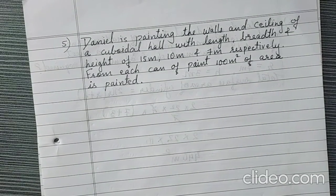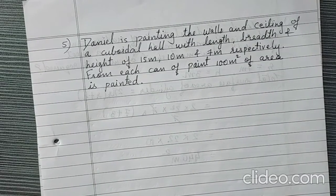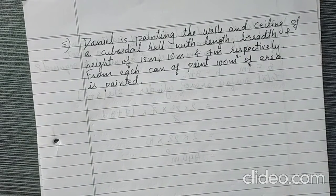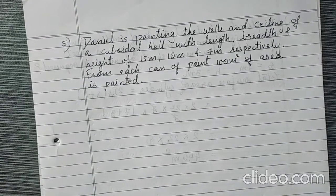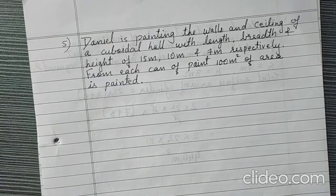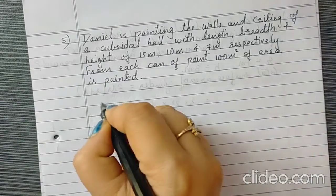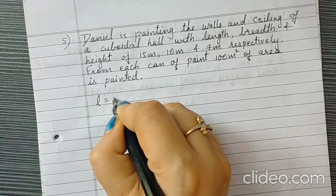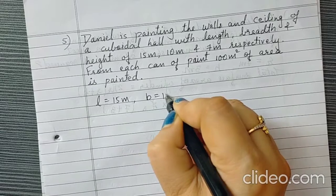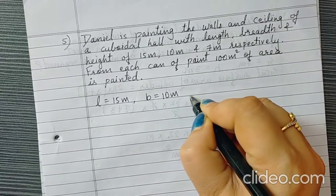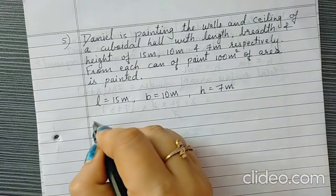For that we need to find both the wall area and ceiling area. Then only we will be able to find the amount of tins required. So, we are given the measurements: length is 15 meter, breadth is 10 meter and height is 7 meter.